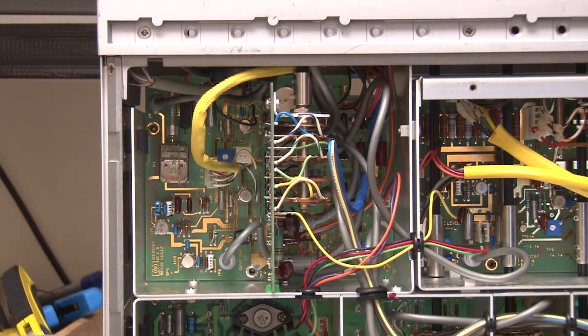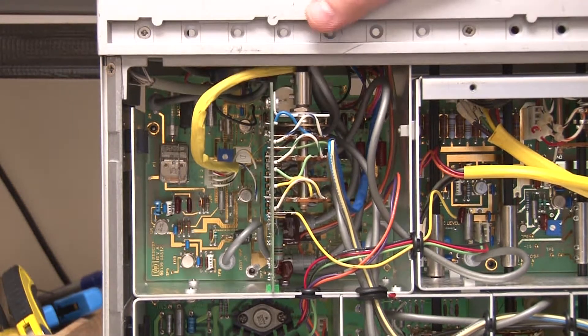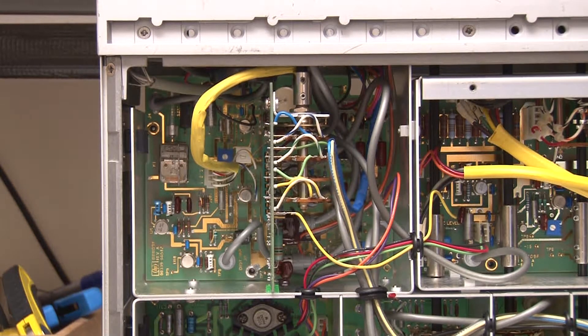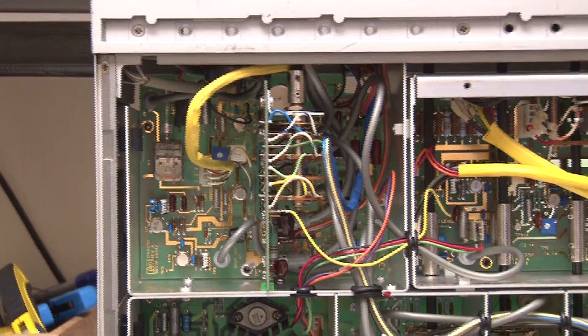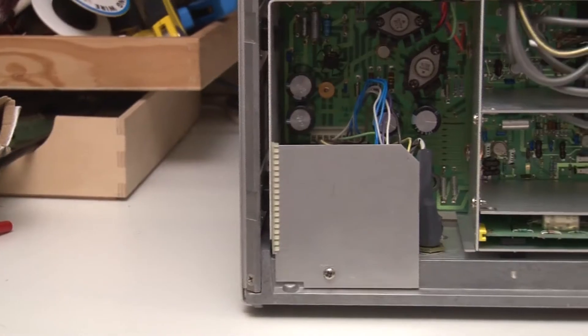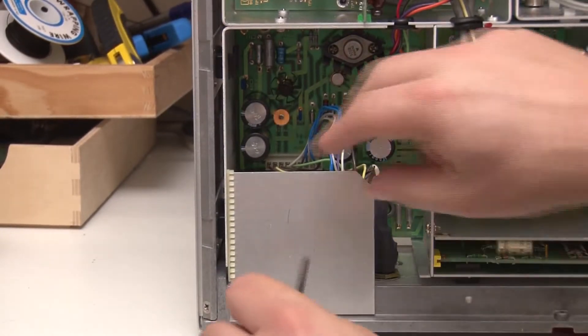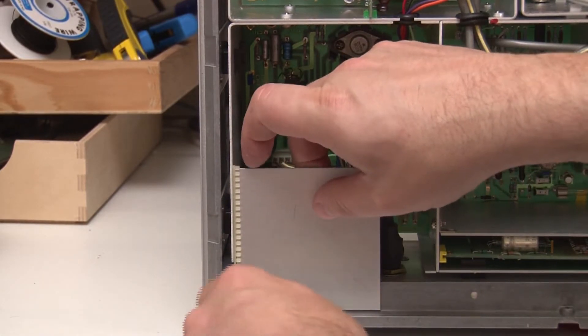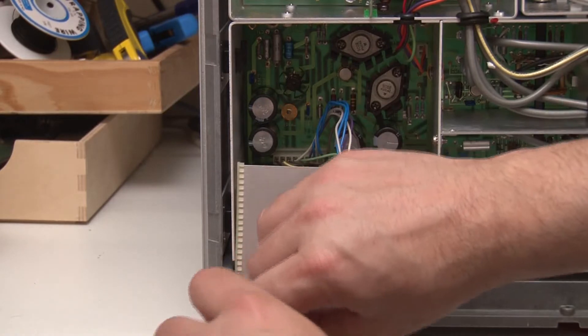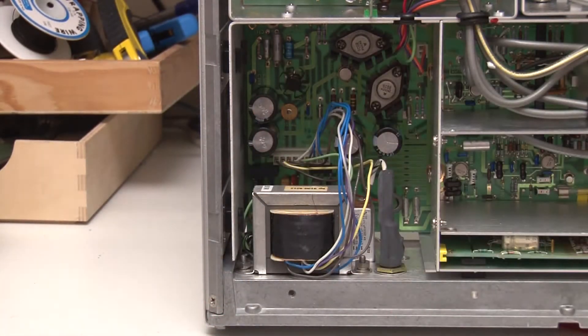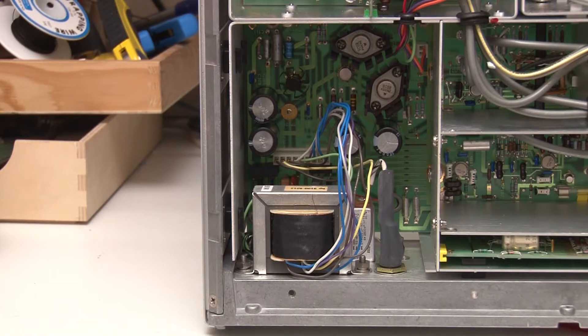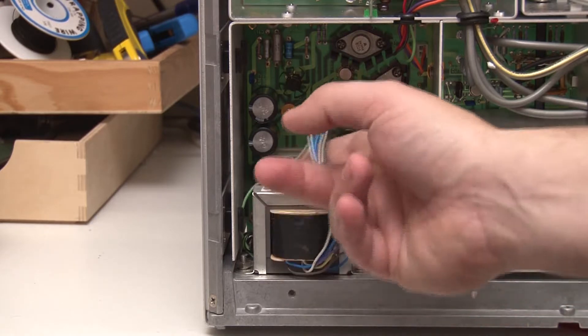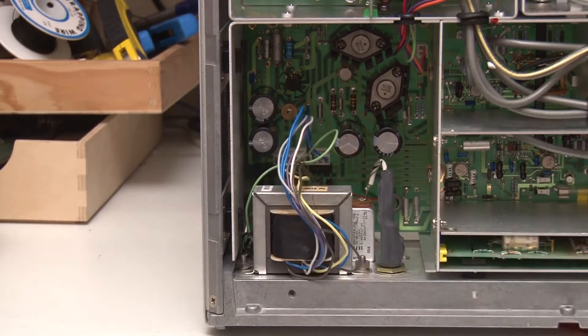This is the meter selection function. So this is the switch used to select the various functions of the meter. Power supply is right down in here. Let's just take a look behind here and see what we've got. Very, very small mains transformer for the size of the equipment, but obviously this doesn't draw very much current here, as you can see.